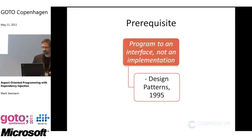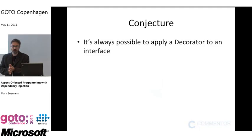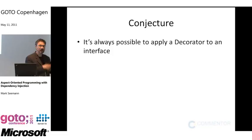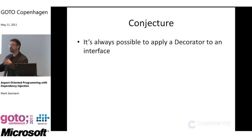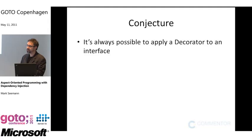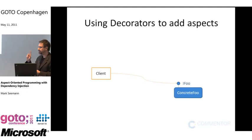I have a conjecture: you can always apply a decorator to an interface. The Decorator is a design pattern where you add a new class that implements the same interface as another class, wraps around the original implementation, and delegates to it while potentially adding new behavior. I've never seen this conjecture mathematically proven, but I've also never seen it proven wrong. This is the fundamental thing that allows us to apply cross-cutting concerns in loosely coupled code.